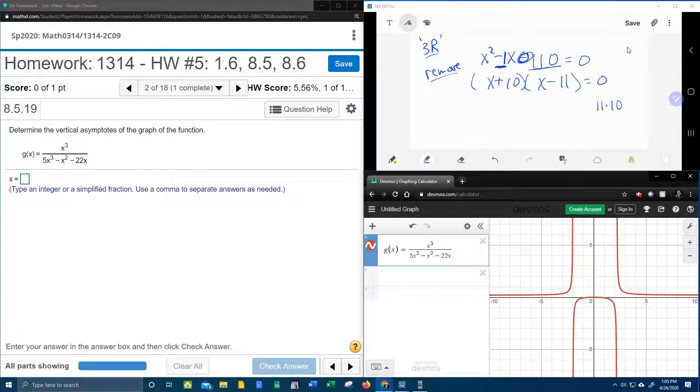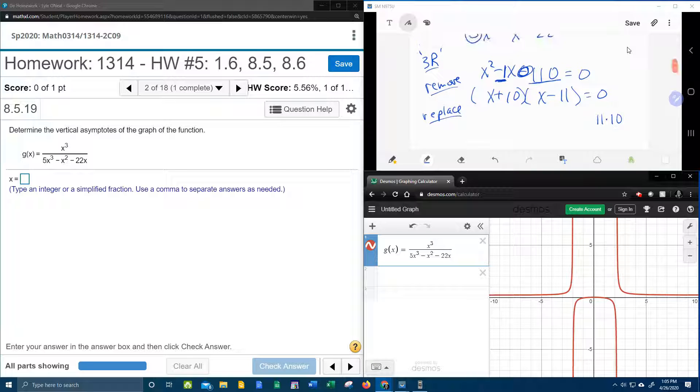So now that that is factored, I can do the second R, which is replace. And I need to go back and ask myself, what did I remove? I removed the 5.